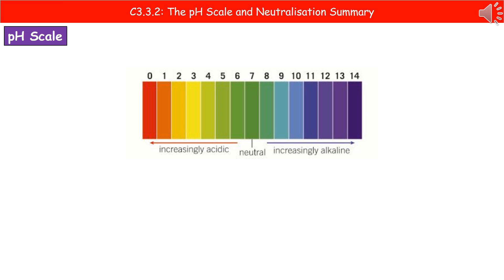Hopefully we've all seen the pH scale before. This is showing us the colours and the numbers associated — the colours are what we see with universal indicator solution, and the numbers are the actual values associated with the pH itself. In the middle there's that clear green colour at pH 7, which is our neutral. Moving right, we start with weak alkalis and get increasingly more alkaline up to pH 14. The same thing going left with acids — pH 6 is a weak acid, all the way down to pH 0, which is our strong acid.